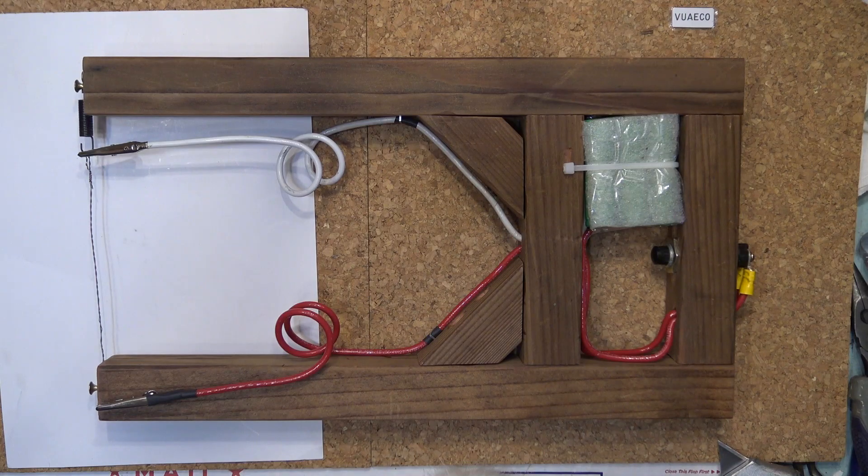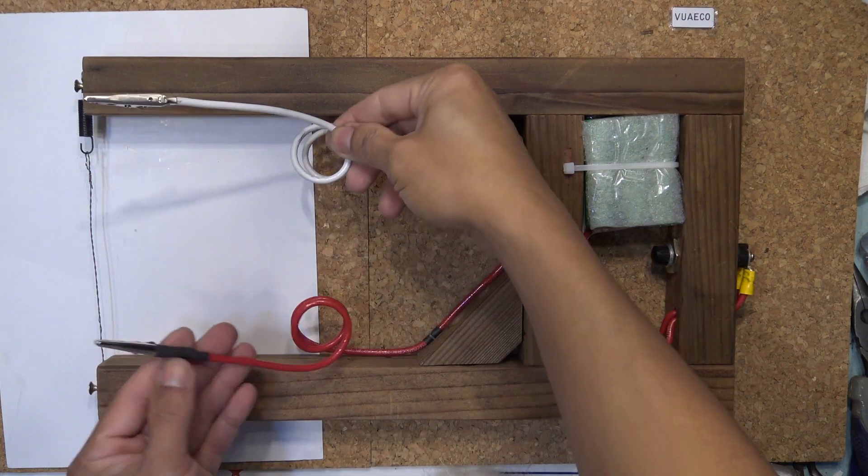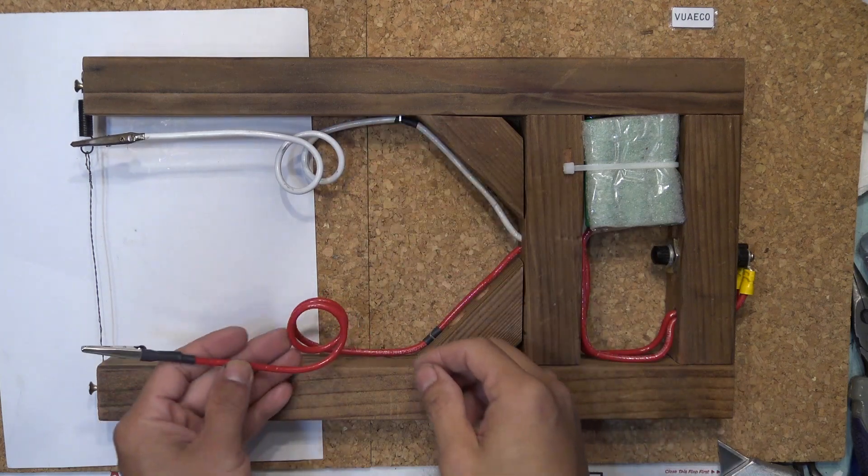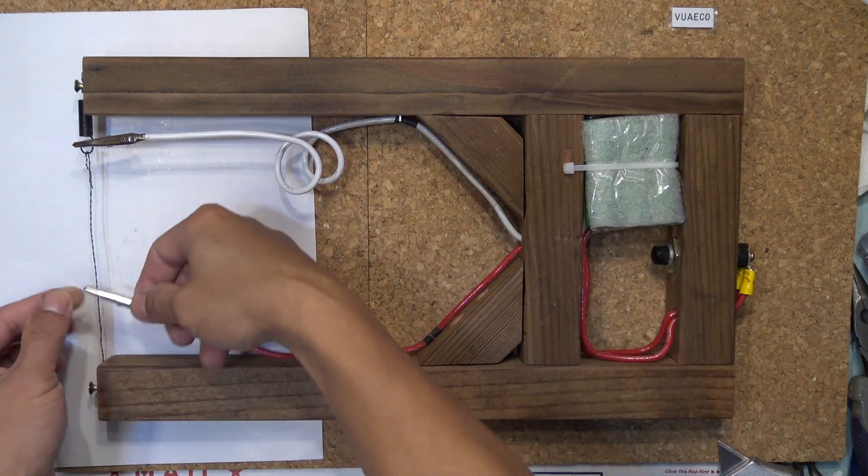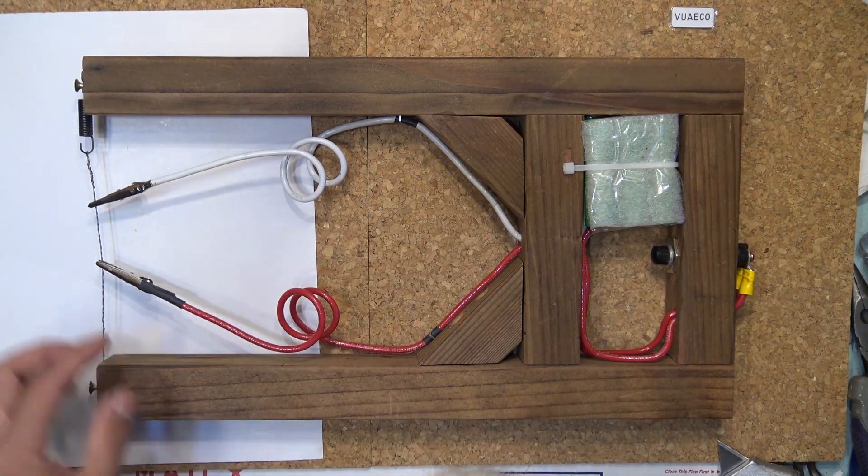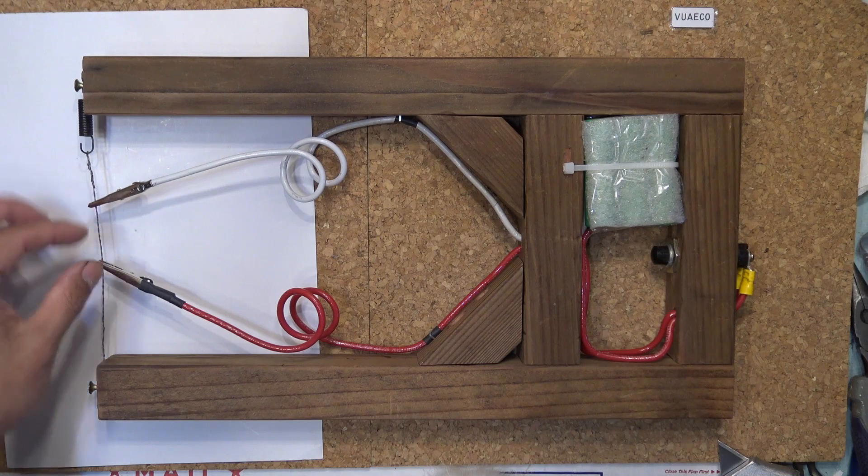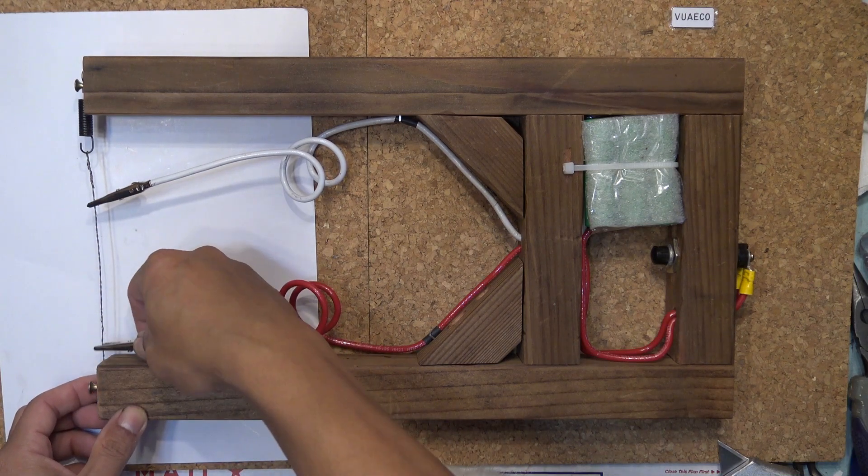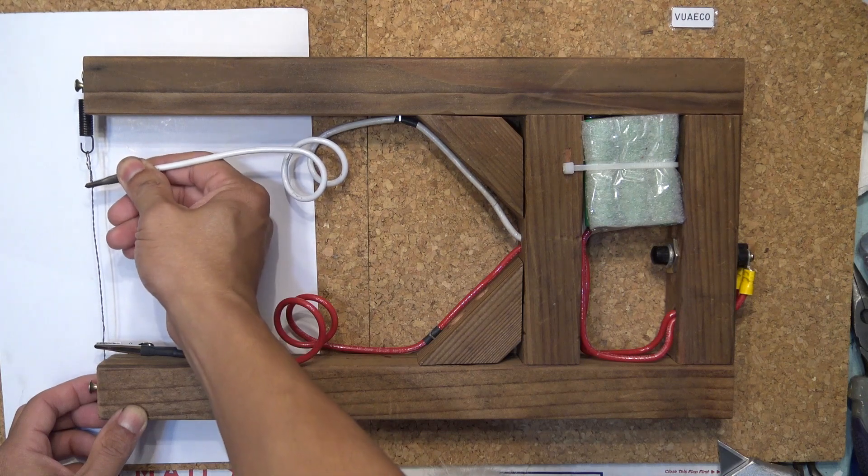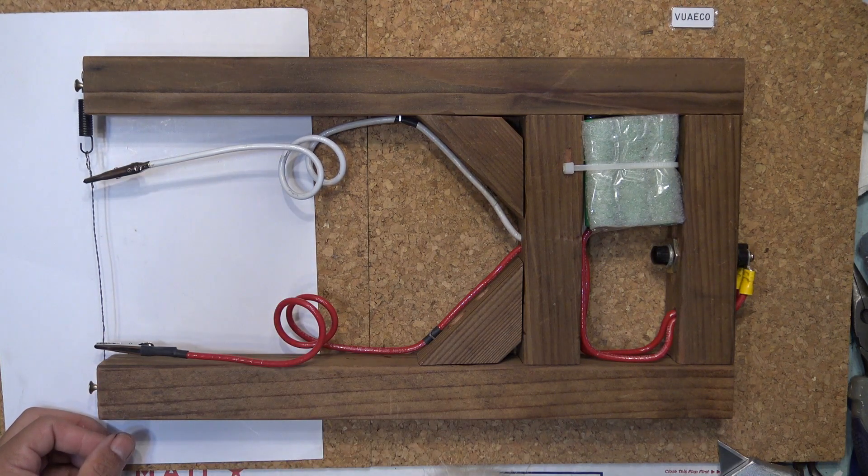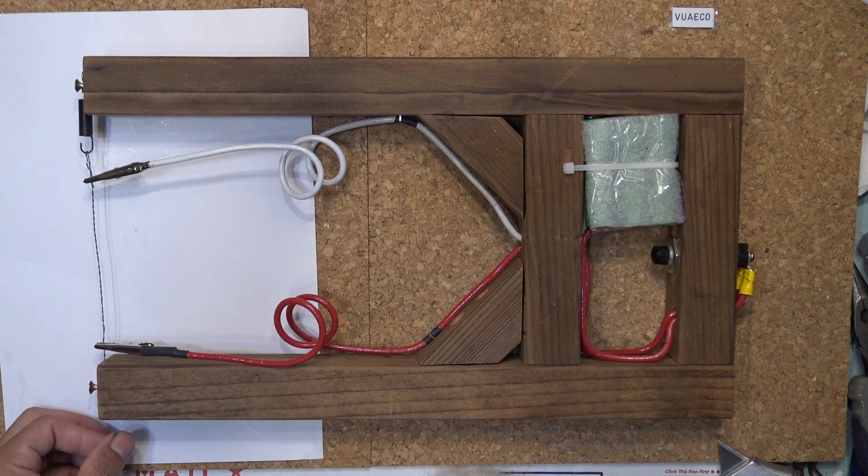With my two alligator clips moving independently, I can adjust the cutting power by adjusting the distance between them. To increase power, I put them closer together. That way it will consume more power, get much hotter and I can cut through thicker plexiglass. To reduce the power, I put them far apart and they will consume much less power and get less hot. This is good for cutting very thin plastic or foam.